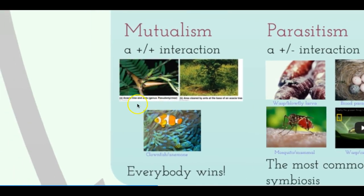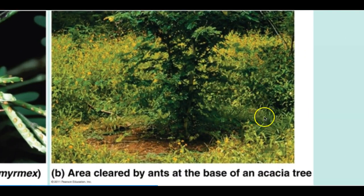Mutualism examples: ants living on an acacia tree benefit because they get a place to live, and the tree benefits because the ants help protect it from herbivores and may even boost the tree's immunity to certain pathogens, though some ant species can also be parasitic to trees. Another example is the sea anemone and clownfish — the sea anemone secretes poison that kills most fish, but clownfish can develop immunity to it.